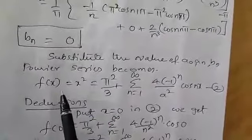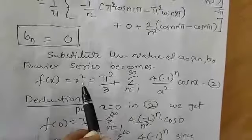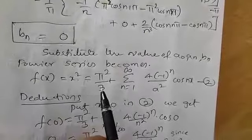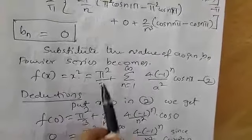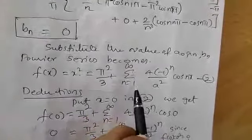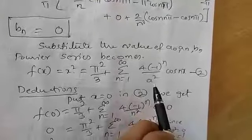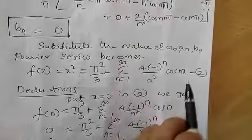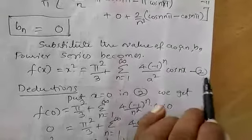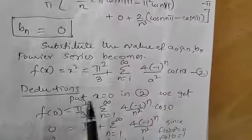Substituting the values of a₀, aₙ, and bₙ into the Fourier series formula, the series for f(x) = x² becomes: x² = π²/3 + summation n=1 to infinity of [4(−1)ⁿ/n²] cos(nx). This is equation number 2.